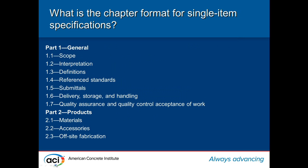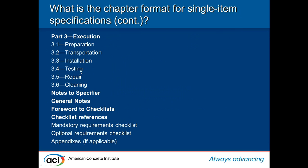Next is where it gets a little more tricky — we're on to specifications, which are Chapter 6 in your TCM, page 33. All of ACI's construction specifications are written in a three-part format according to the Construction Specifications Institute. Part one covers the general requirements. Part two addresses products. Part three deals with the execution. For a single technical subject specification, you'd have your general section with scope, interpretation, definitions, and reference standards; then part two, your products; and then part three, your execution, with subsections as applicable.